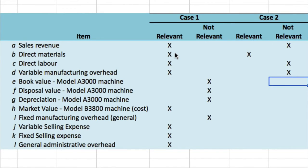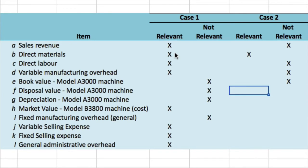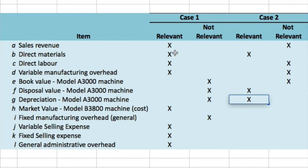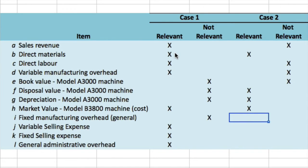The book value is a sunk cost — it doesn't matter what we paid for it. Disposal value of the A3000: we're told we're going to sell it, so if we get the new machine, the sales proceeds from the old machine are relevant. They differ under both scenarios, so disposal value is relevant. Depreciation for the A3000: we're getting rid of it, so there won't be a depreciation charge going forward. The market value of the B3800 — if we buy it, we have to consider it; it is differential. Fixed manufacturing overhead?